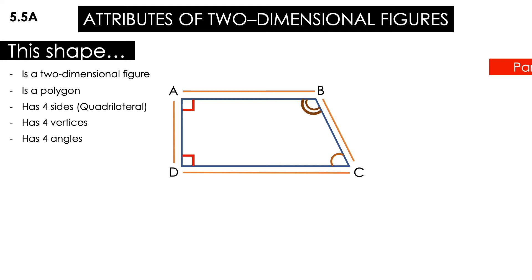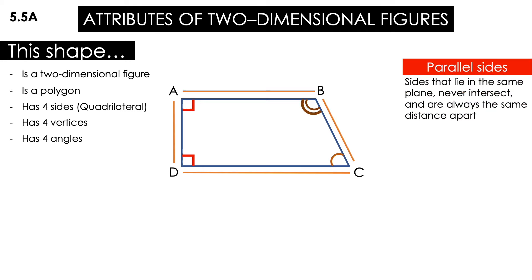Now, let's go with the next portion, which is going to be the parallel sides. These are sides that lie in the same plane, never intersect, and are always the same distance apart. AD, BC, DC, or AB are parallel. Well, we have that AB is parallel with DC.